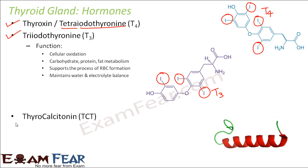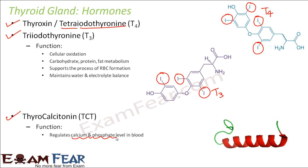The thyroid gland also releases another hormone called thyrocalcitonin, which maintains the calcium and phosphate level in the blood. Maintaining the right level of calcium and phosphate is important because they are important constituents of our bones. If this balance is disturbed, a person might suffer from problems in his bones. Whenever calcium and phosphate levels go very high, thyrocalcitonin helps to decrease the level and control the balance.